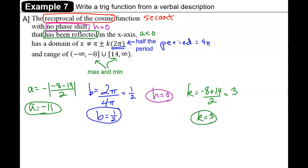So when we put all four pieces together into transformation form, we have y = -11 sec(1/2 x) + 3. That's the equation based on the verbal description given.